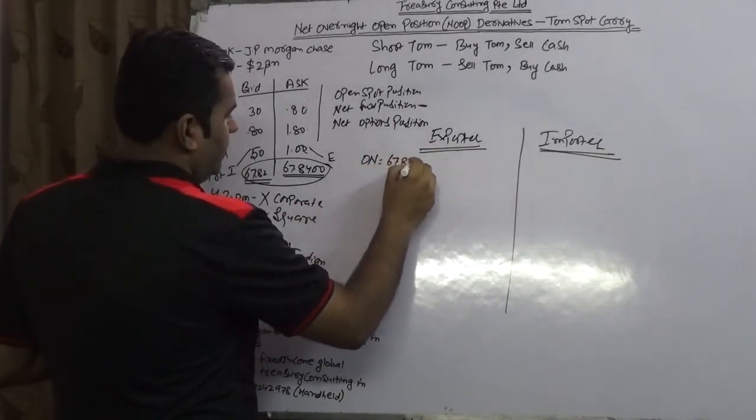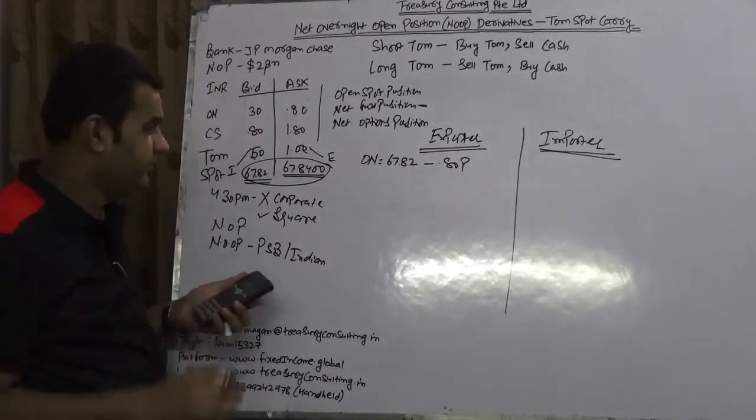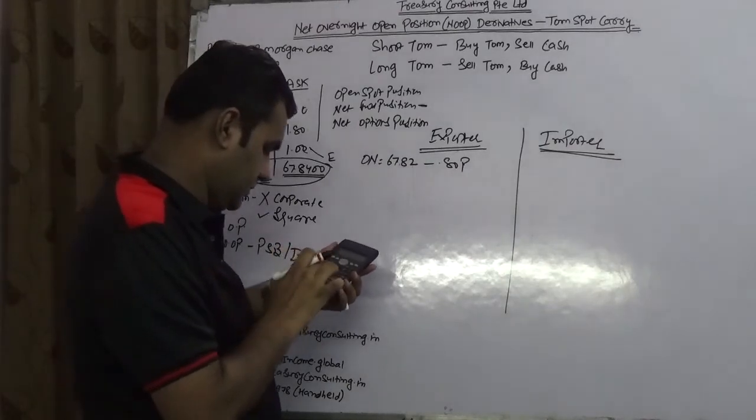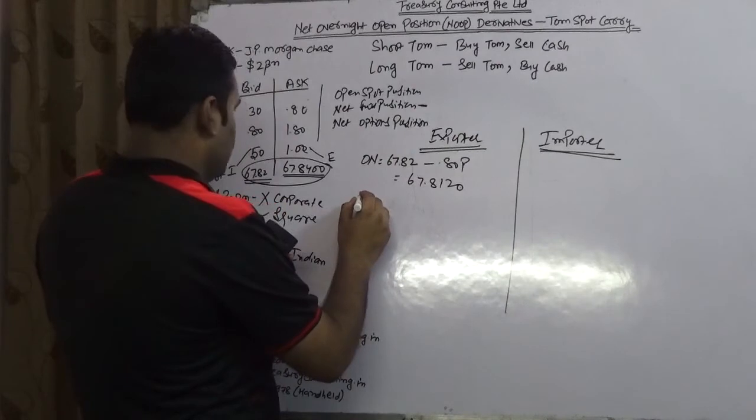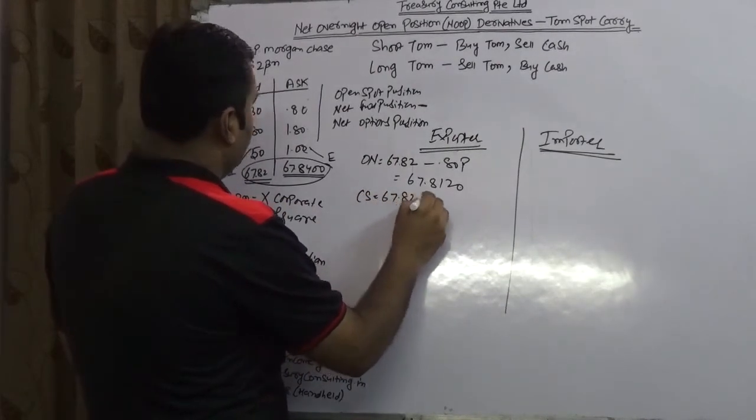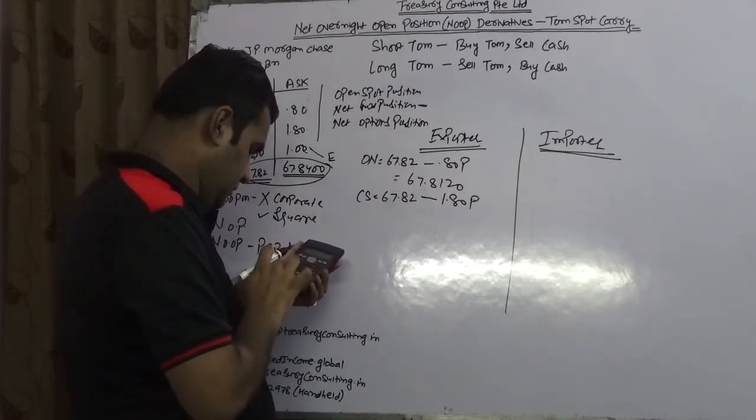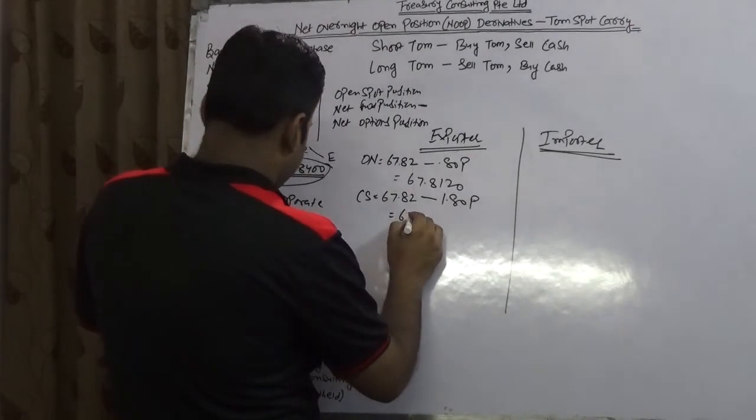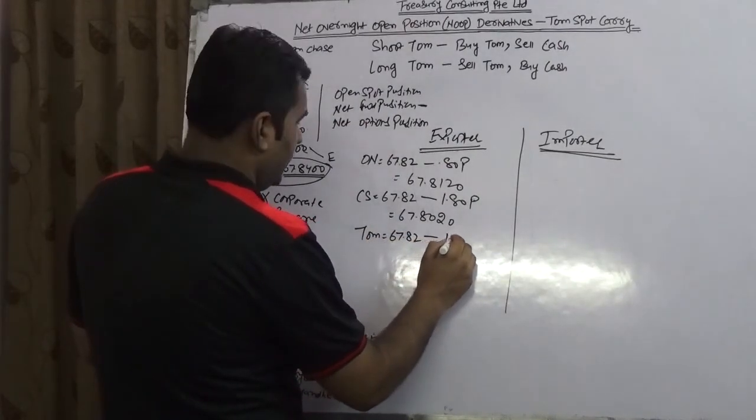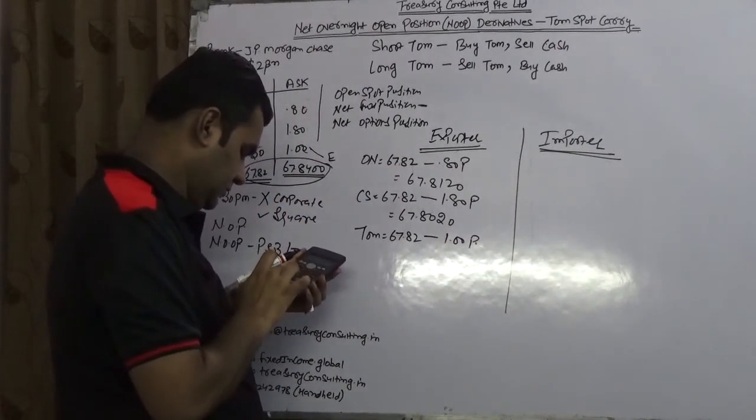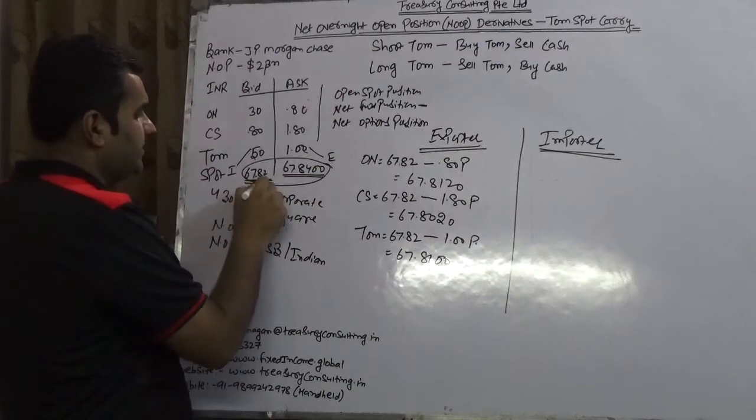Overnight, 67.82, which is the exporting spot, minus 0.80 paisa. This stands 67.8120. One is cash spot, 67.82 minus 1.80, equals 67.8020. One is Tom, 67.82 minus 1. I know the answer is pretty simple, but still I am calculating. 67.8100. So spot, I have taken this, but the points, I have taken this.